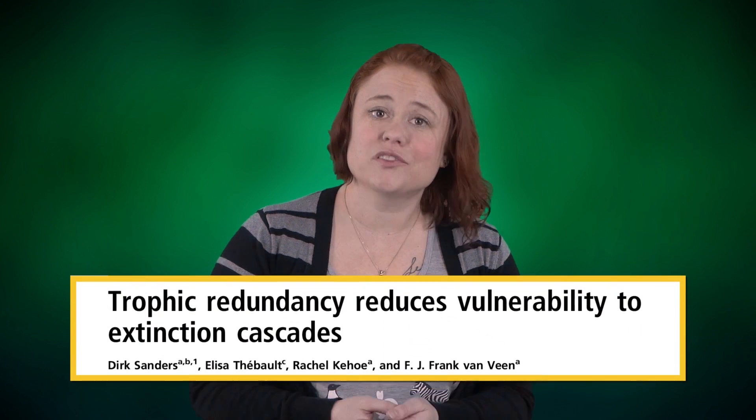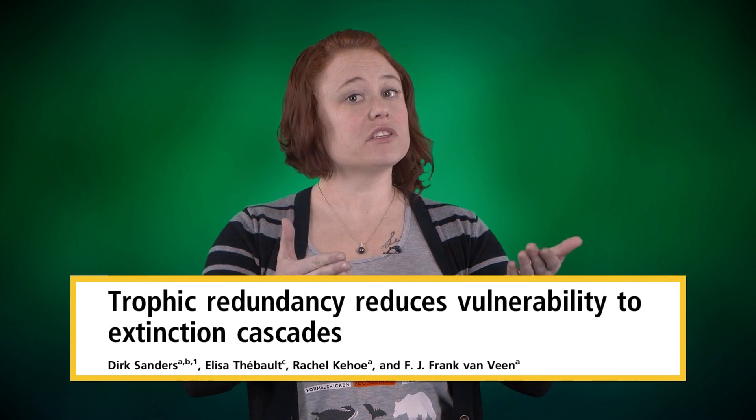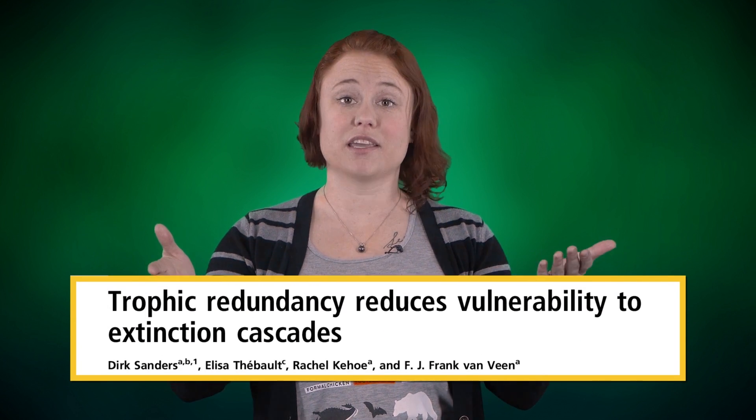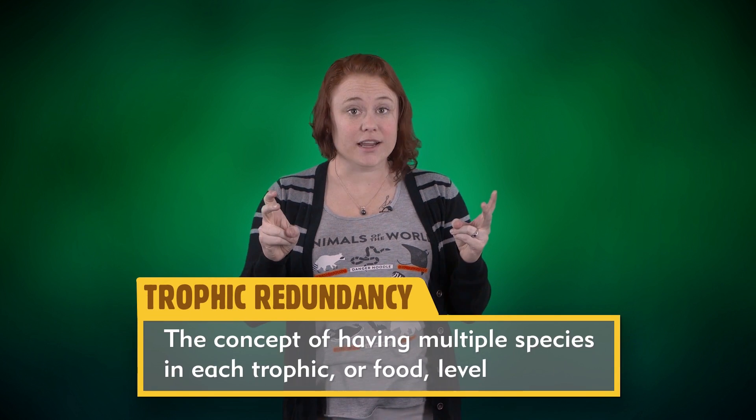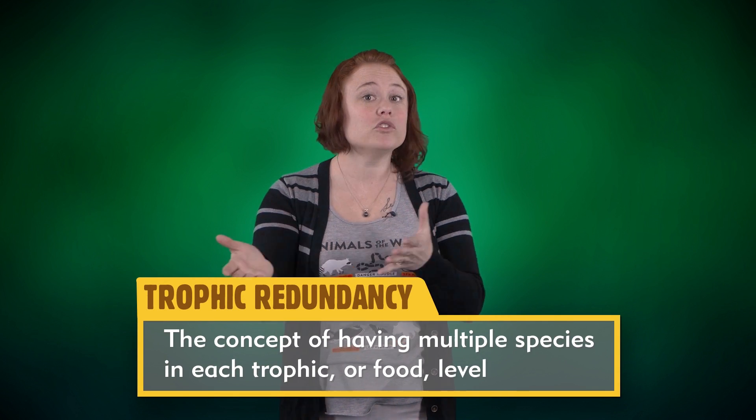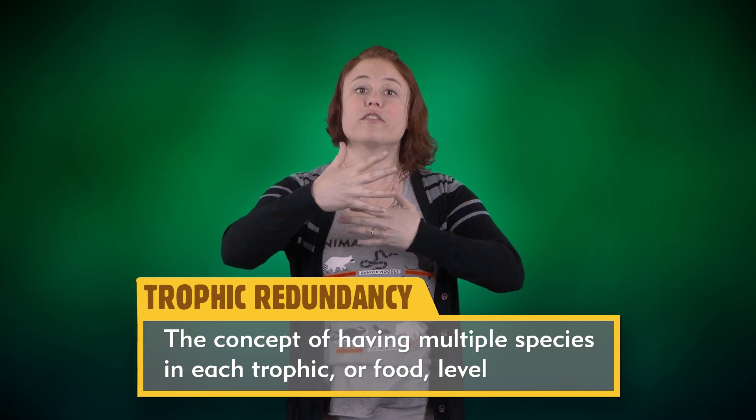The title of the paper is Trophic Redundancy Reduces Vulnerability to Extinction Cascades. There's still some vocab we should go through to get off to a strong start. Trophic Redundancy is the concept of having multiple species in each trophic, or food, level — basically a situation where you have multiple producers and multiple consumers at each level of the food chain, or in each available niche, or job.